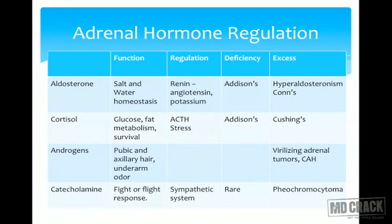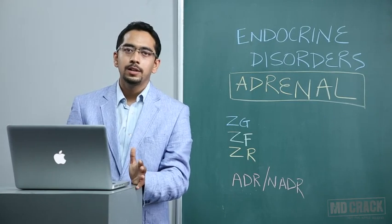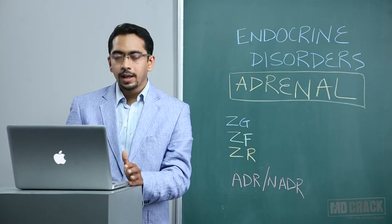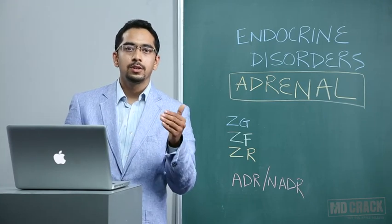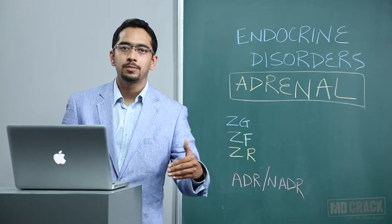Excess cortisol production is Cushing's syndrome. Regarding androgen production: adrenal androgens are weak androgens, but if produced in excess amounts, you can have virilization or a male-like pattern of hair growth. This virilization can be seen in adrenal virilizing tumors or in congenital adrenal hyperplasia. The pubic and axillary hair that appear during puberty and underarm odor are due to adrenal androgens. As age increases, adrenal androgens decrease in concentration, so underarm odor diminishes.